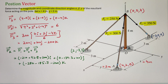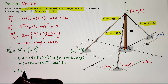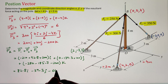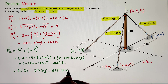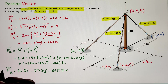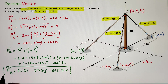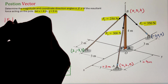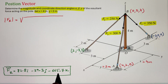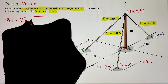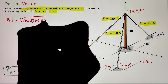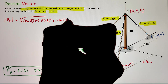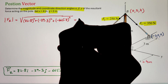The question asks us to determine the magnitude and coordinate direction angles alpha, beta, and gamma of the resultant force. We calculate the magnitude by taking the square root of all squared components: square root of 82.8 squared plus negative 39.3 squared plus negative 665.7 squared, which gives us a resultant magnitude of 672 Newtons.